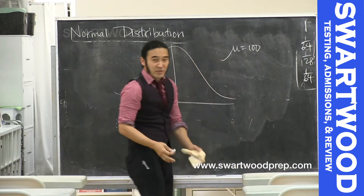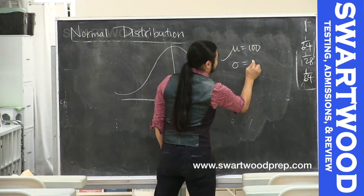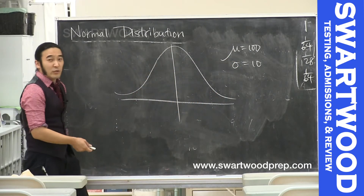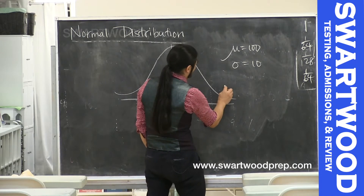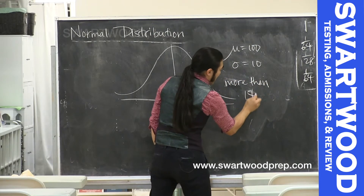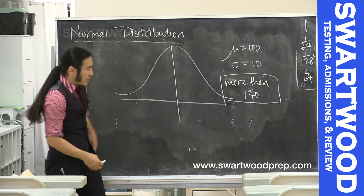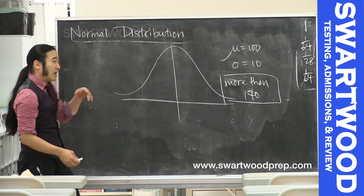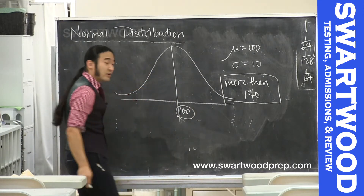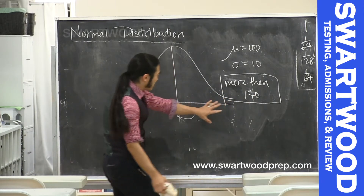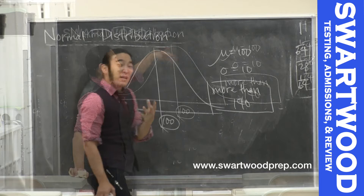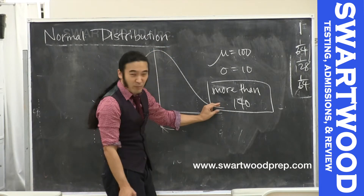Let's say the average person eats 100 pounds of gummy bears per day, and the standard deviation is 10. That means most people eat between 90 and 110 pounds of gummy bears per day. I want to know: what's the likelihood that you pick somebody at random and that person eats more than 140 pounds of gummy bears? We draw the mean at 100 — this is a frequency distribution where you line up all the possible scores.